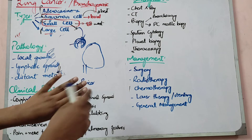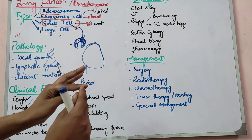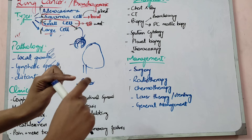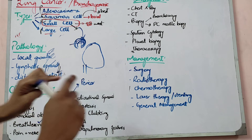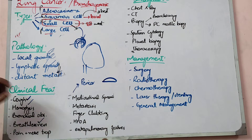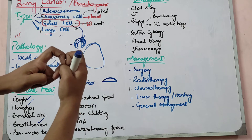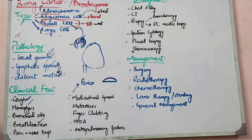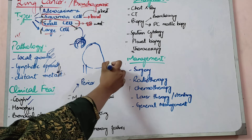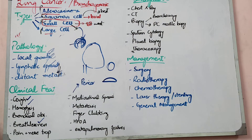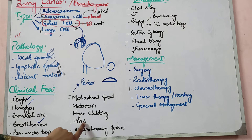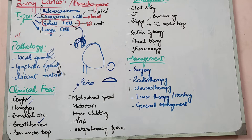Clubbing is a very common feature of chronic lung disease or chronic liver disease. The shape of the fingers changes — the nails become clubbed and when you look at the fingers together, they will not form a diamond shape. There is also hypertrophic pulmonary osteoarthropathy, HPOA, where the joints and bones are involved. Basically, the tibia and fibula bones are affected with periostitis-type changes, causing edema and swelling of the joints. This is often associated with lung tumors.